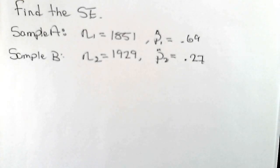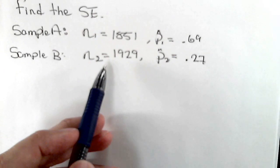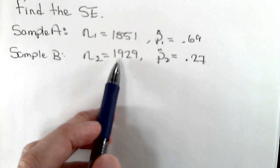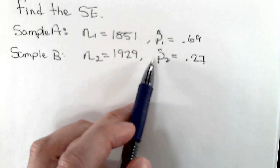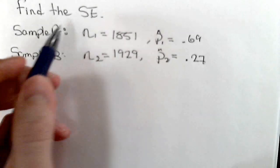Find the standard error. We're given two different samples. Sample A has a sample size of 1,851 with a sample proportion of 0.89. Sample B has a sample size of 1,929 with a sample proportion of 0.27. We're asked to find the standard error.